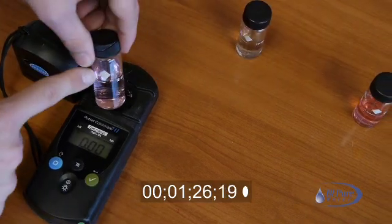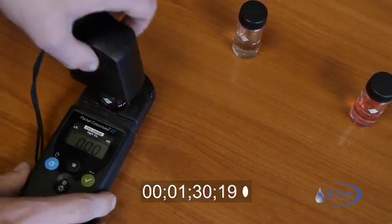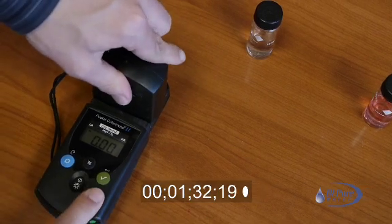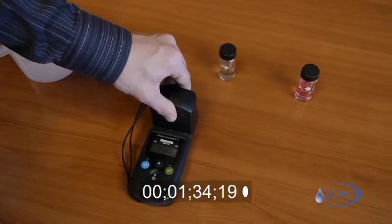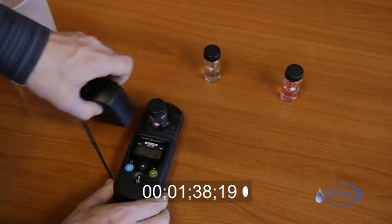Introduce the total chlorine sample, again with the diamond pointing at the instrument center. Put the measurement cap on and press the measurement button. The instrument will now indicate the total chlorine reading.